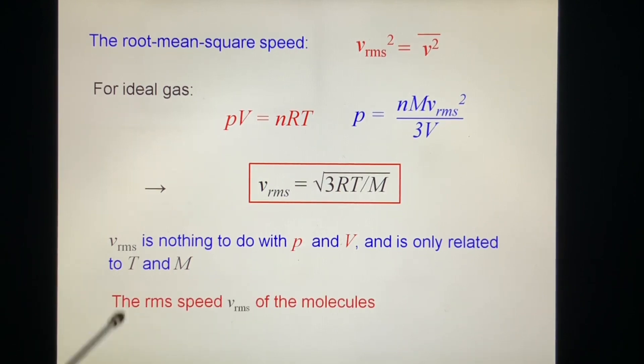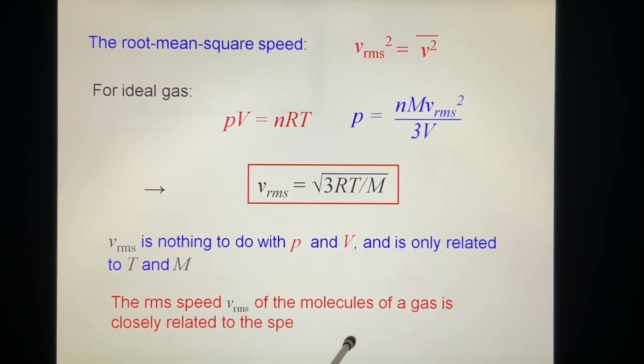This is how we do that. And from this we learn: V root mean square has nothing to do with pressure P and volume V, and is only related to temperature T and molar mass. All the gases have the same formula. Different masses have different molar mass. The root mean square speed Vrms of the molecules of a gas is closely related to the speed of sound in that gas. Sound speed is related to this.